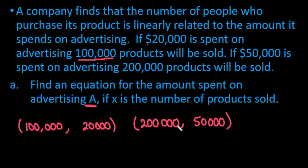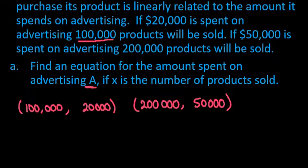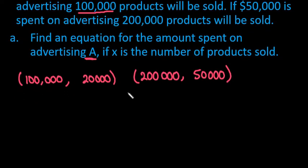So essentially what we have here is two ordered pairs and to come up with the equation we want to use the relationship. I'm going to use point-slope form. So I'm going to do y minus y1 equals m times x minus x1, and what we want to do first is find the slope.